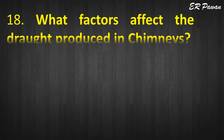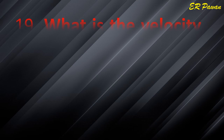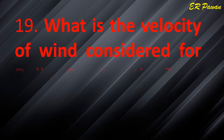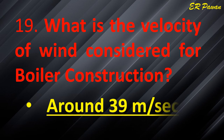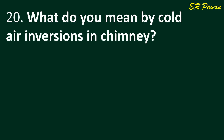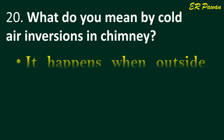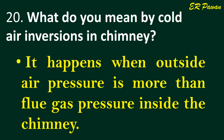Question 18: What factors affect the draft produced in chimneys? Flue gas temperature and air temperature. Question 19: What is the velocity of wind considered for boiler construction? Around 39 meters per second. Question 20: What do you mean by cold air inversions in a chimney? It happens when outside air pressure is more than flue gas pressure inside the chimney.